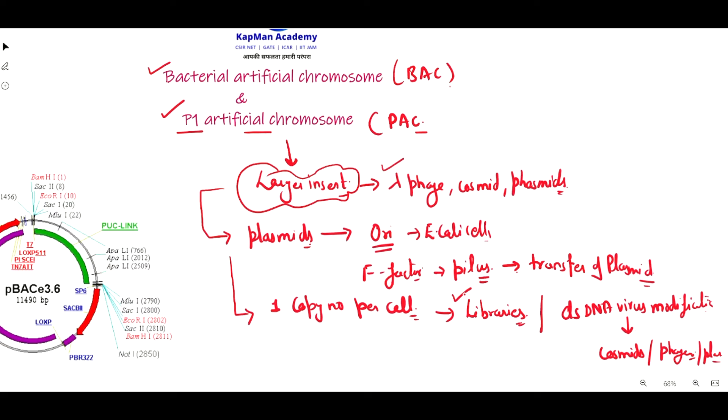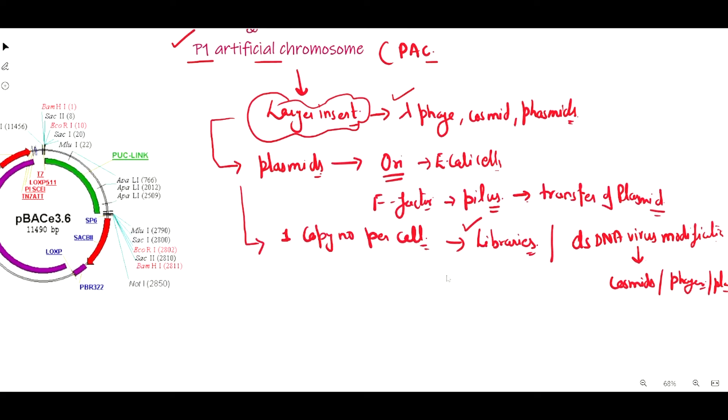If we talk about P1 derived artificial chromosome, it also has large capacity to accommodate inserts, like BAC and YAC. It can be easily cultured in E. coli bacterial cells and is also used for the preparation of genomic libraries, for example human and mouse, because it can accommodate larger inserts.